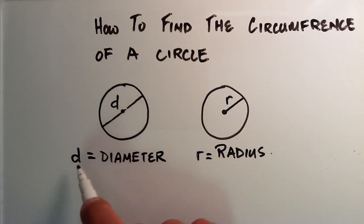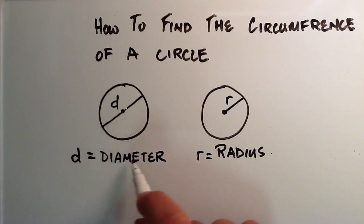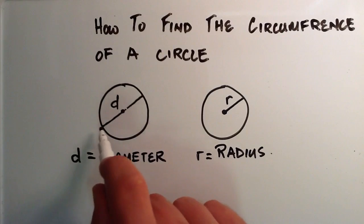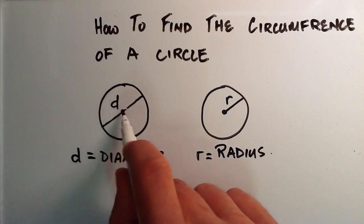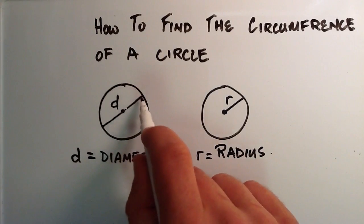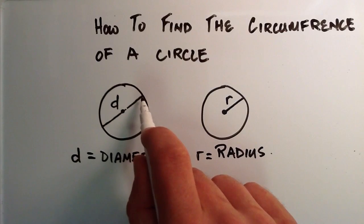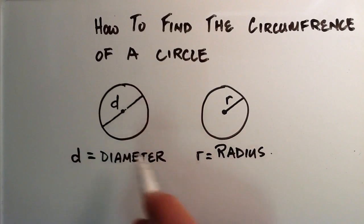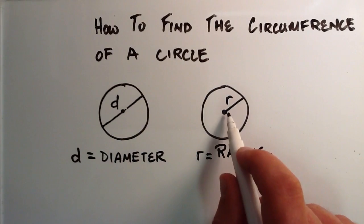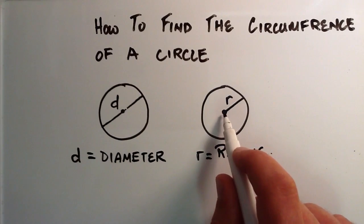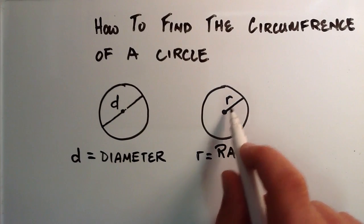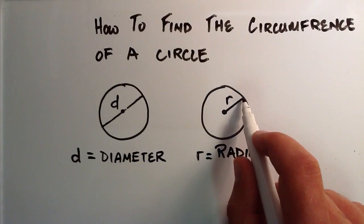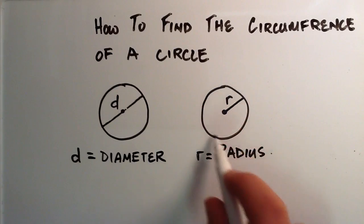The diameter is a line segment that starts at one edge of the circle, travels directly through the center of the circle, and stops at the opposite edge of the circle. The radius is a line segment that starts at the center of the circle and ends on any edge of the circle.